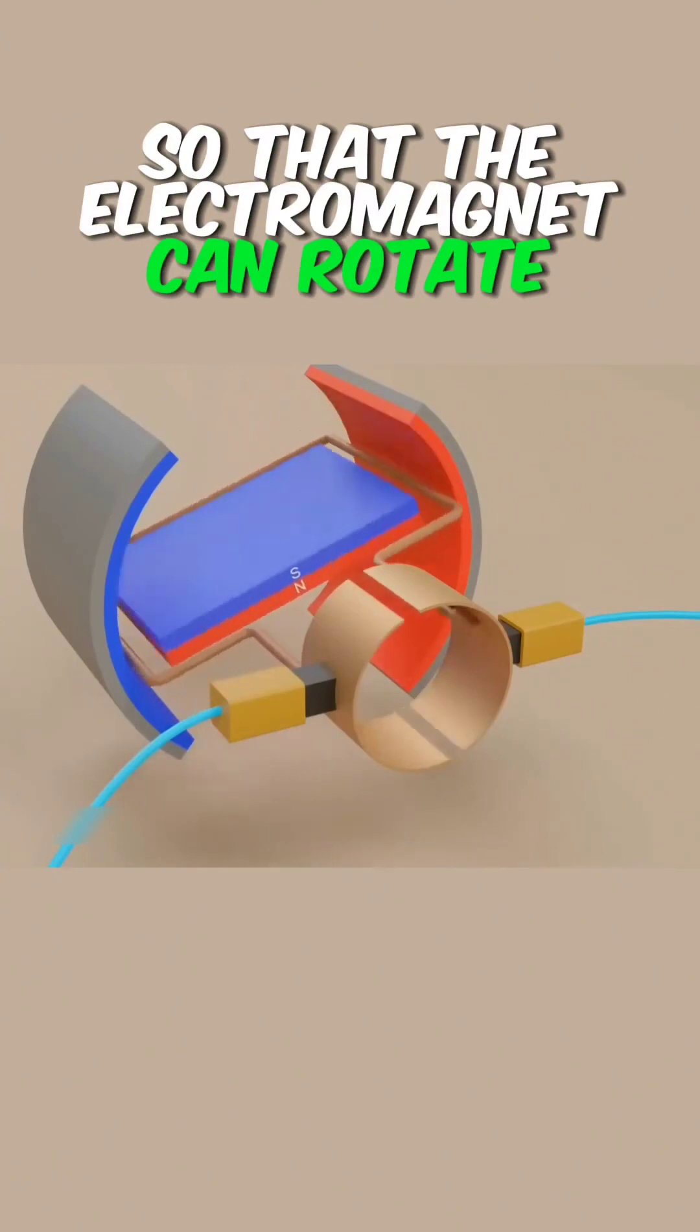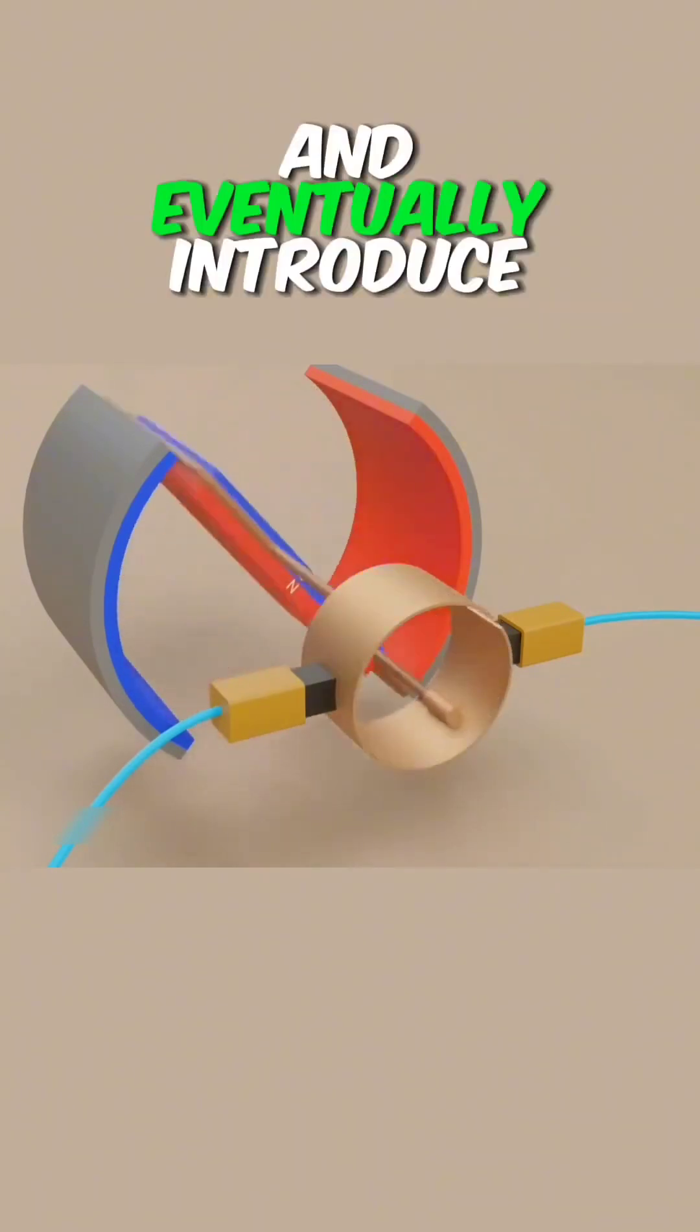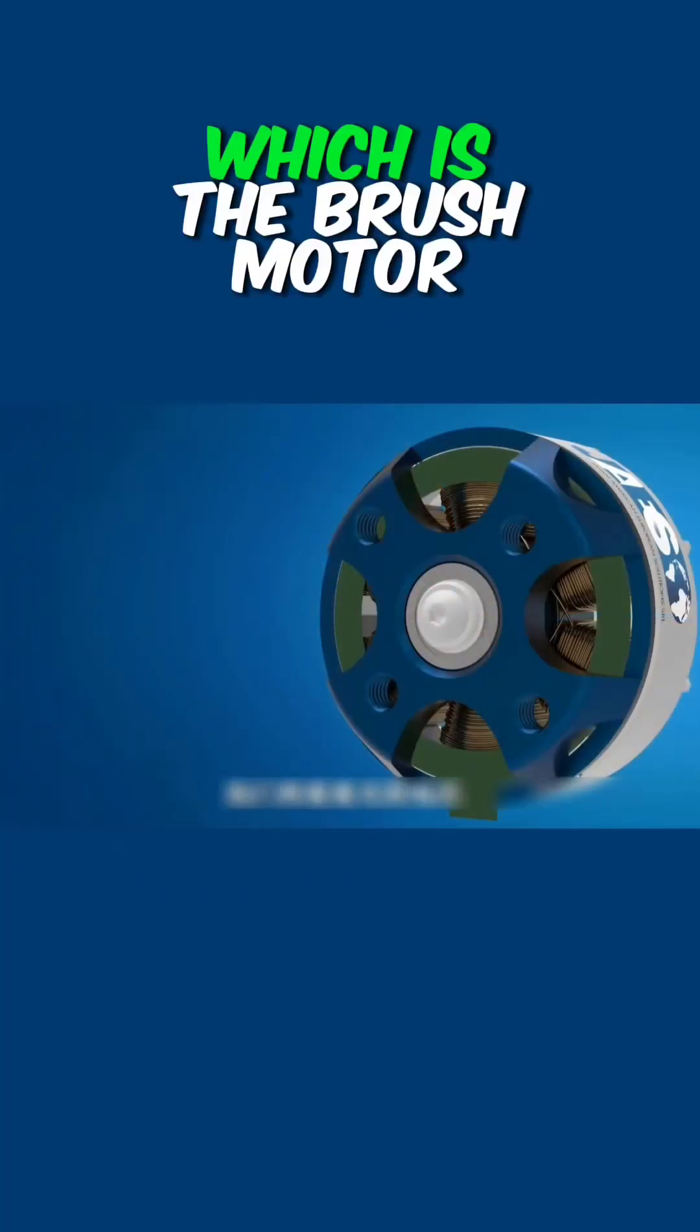In order to continuously change the direction of the current so that the electromagnet can rotate continuously through the interaction of the magnets, we eventually introduce the brush, which is the brush motor.